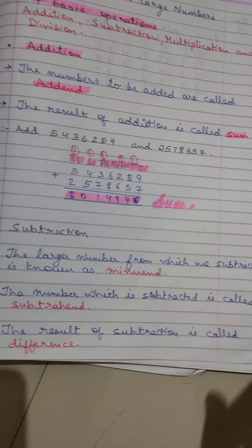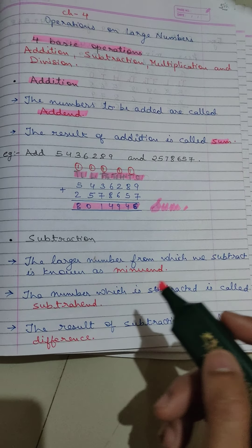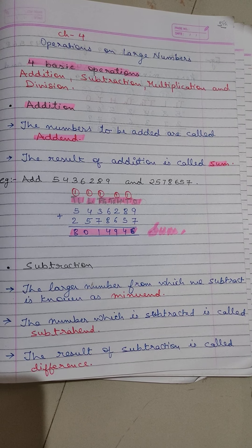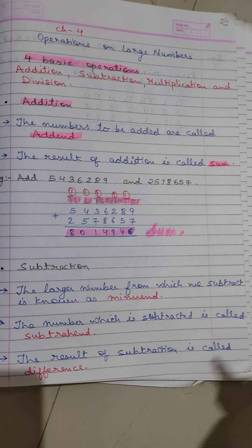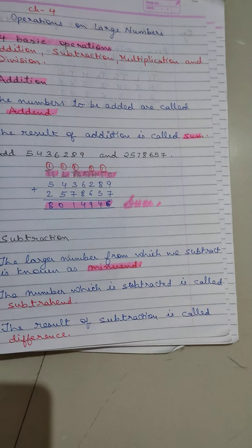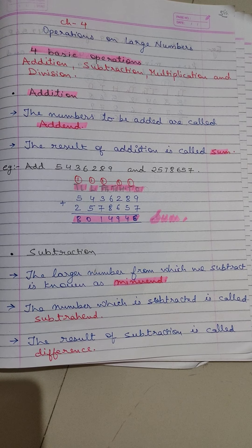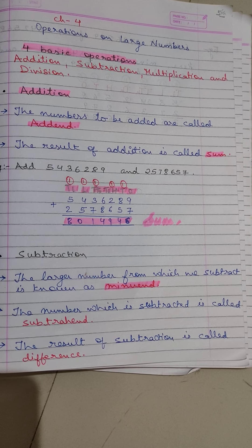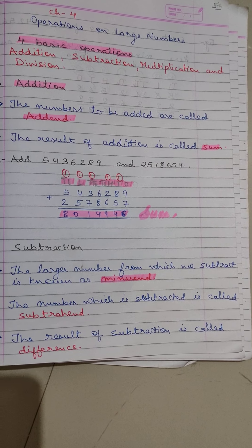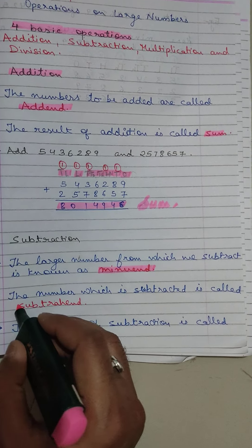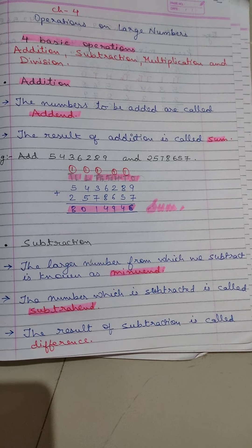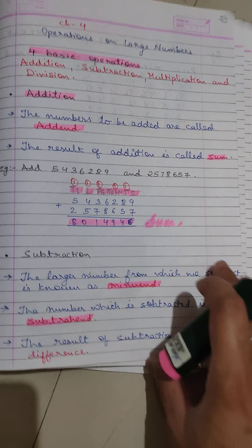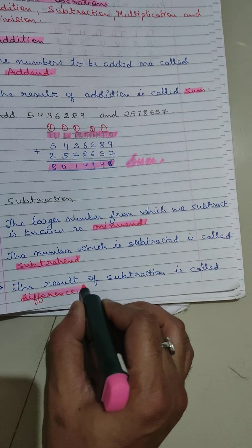Now moving on to subtraction. In subtraction, we also need to see a few key points. The first one is: the larger number from which we subtract is known as the minuend. For subtraction, one number should be larger and the other smaller. The smaller number which is subtracted from the larger number is known as the subtrahend. The answer or result after subtraction is known as the difference.